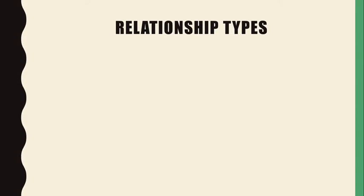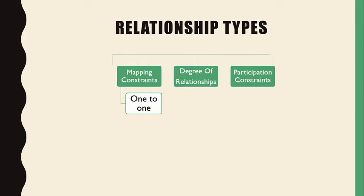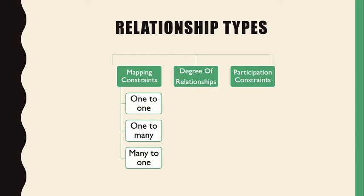There are different relationship types. They are mapping constraints, degree of relationships, and participation constraints — these are the three types. Mapping constraints include one-to-one, one-to-many, many-to-one, and many-to-many relationships.